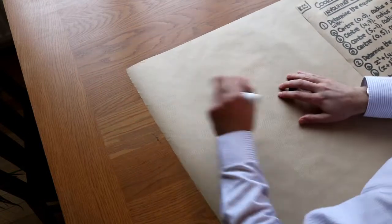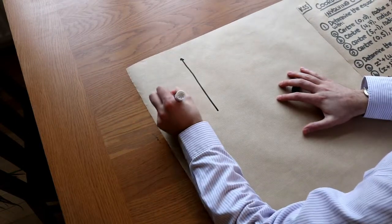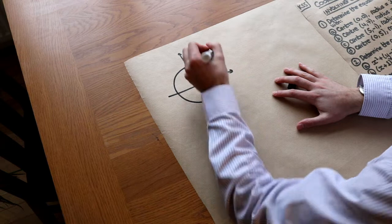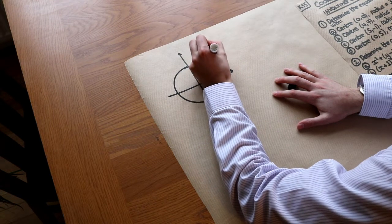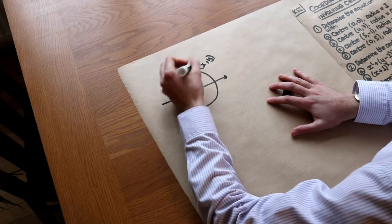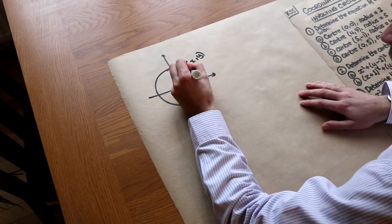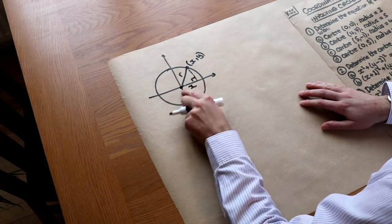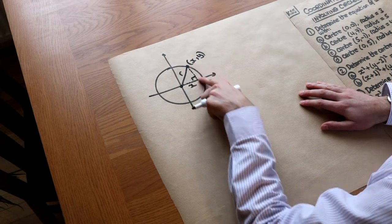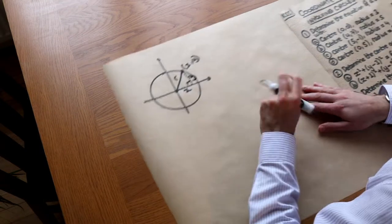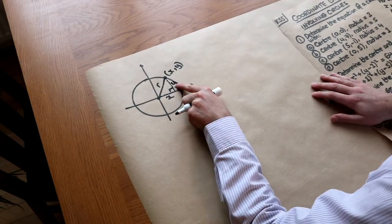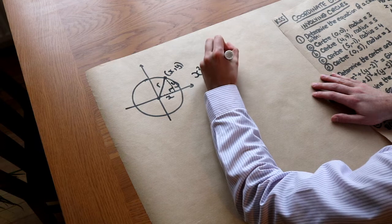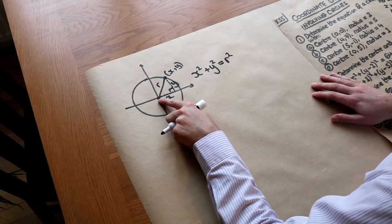Let's start with the general equation of a circle. If you were doing GCSE in the UK, you might have seen the equation of a circle centred at the origin. If you have a generic point XY on the circle with radius R, and form a right-angled triangle, the horizontal distance is X and the vertical distance is Y. Using Pythagoras, X-squared plus Y-squared equals R-squared — that's the general equation of a circle with radius R centred at the origin.